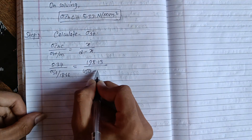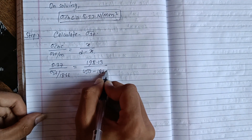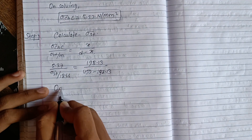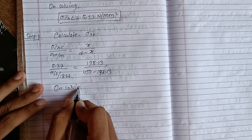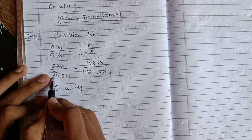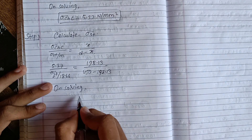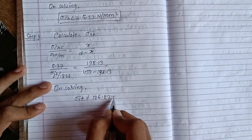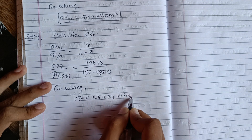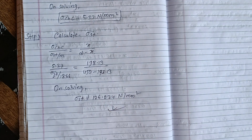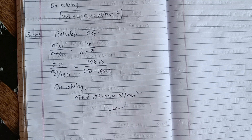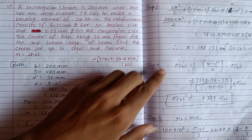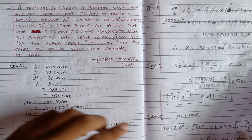X1 is 198.13. Cross-multiplying and solving this, using the calculator, we get X equal to 126.024 N/mm². Hence, sigma ST is equal to T, and sigma CBC is equal to T. This is the case of under-reinforced or over-reinforced section, confirmed by the calculated values.